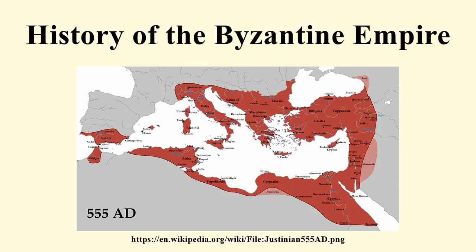Leo was also the first emperor to receive the crown not from a military leader, but from the patriarch of Constantinople, representing the ecclesiastical hierarchy. This change became permanent, and in the Middle Ages the religious characteristic of the coronation completely supplanted the old military form. In 468, Leo unsuccessfully attempted to reconquer North Africa from the Vandals.